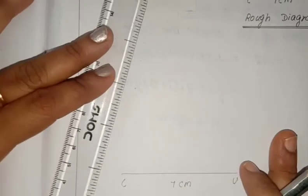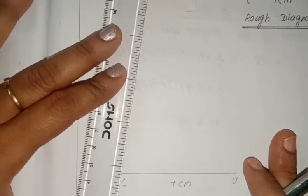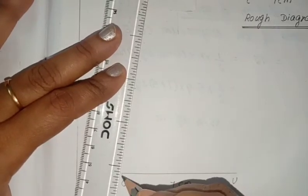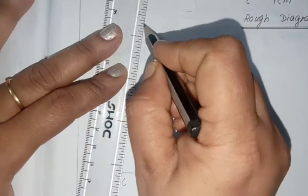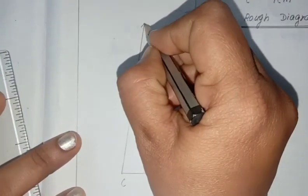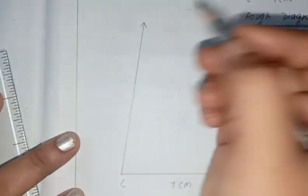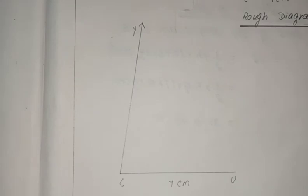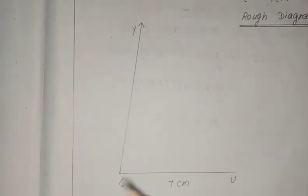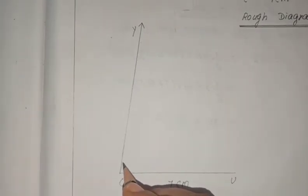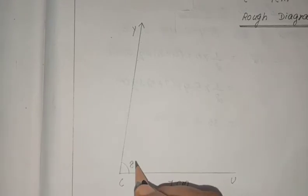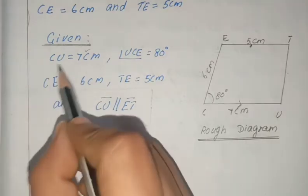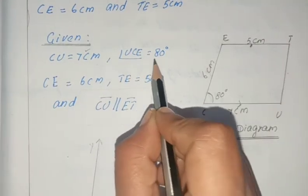Take the scale and draw the line from point C. Name it as ray CY. So now two measurements are over — CU equal to 7 cm is done, and angle UCE equal to 80 degrees is also done.